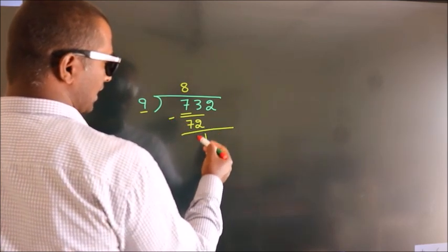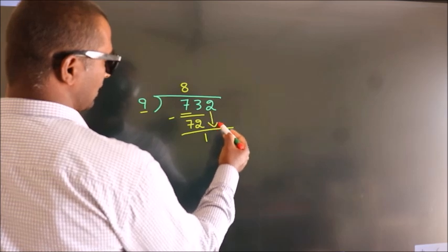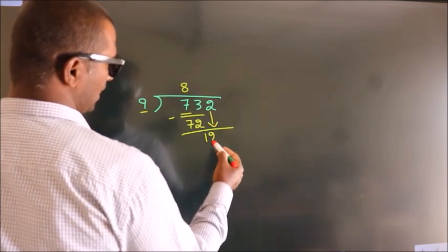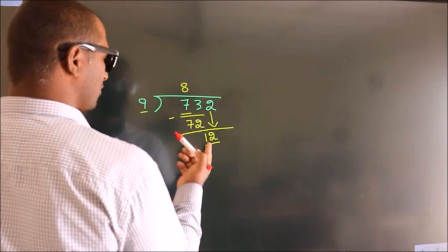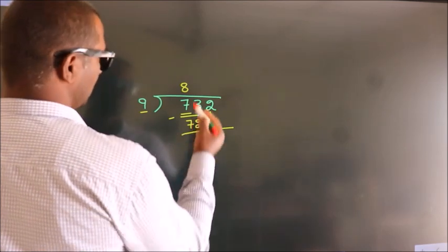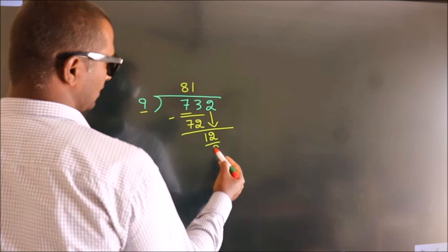After this, bring down the next number. So 2 comes down, giving us 12. A number close to 12 in the 9 table is 9×1, which is 9.